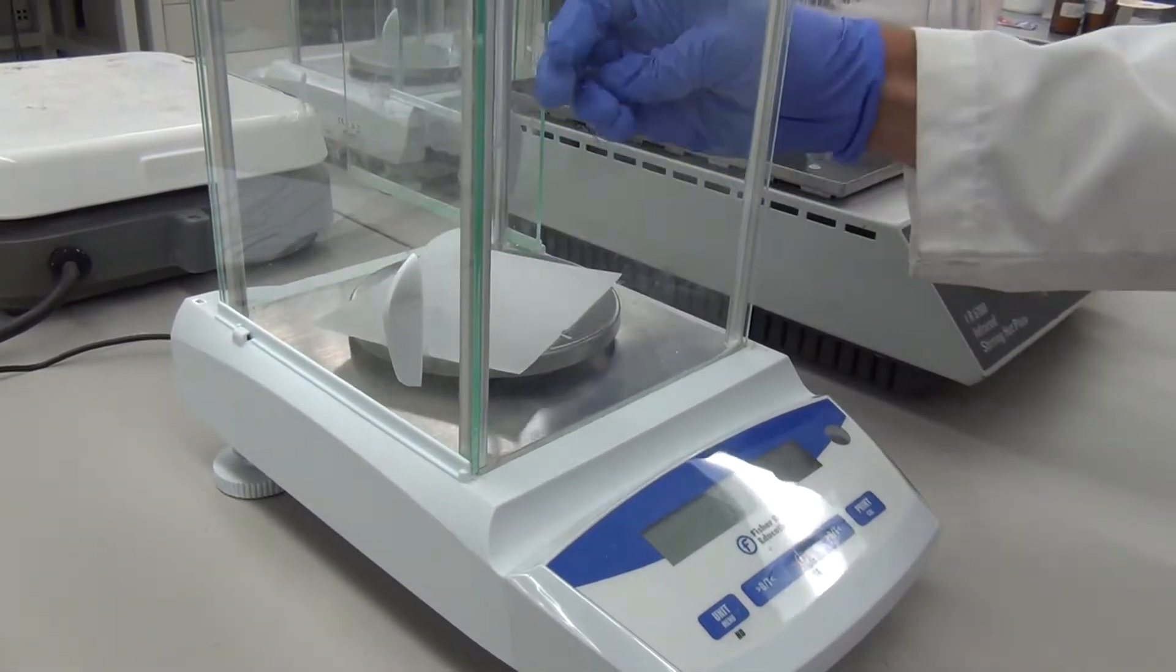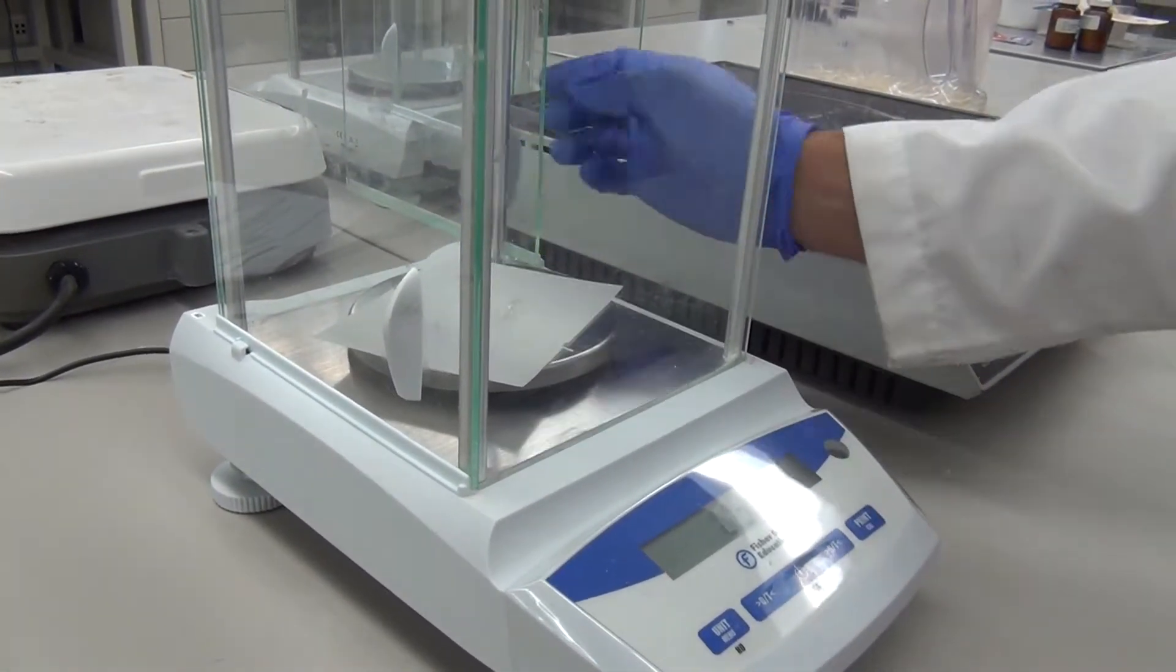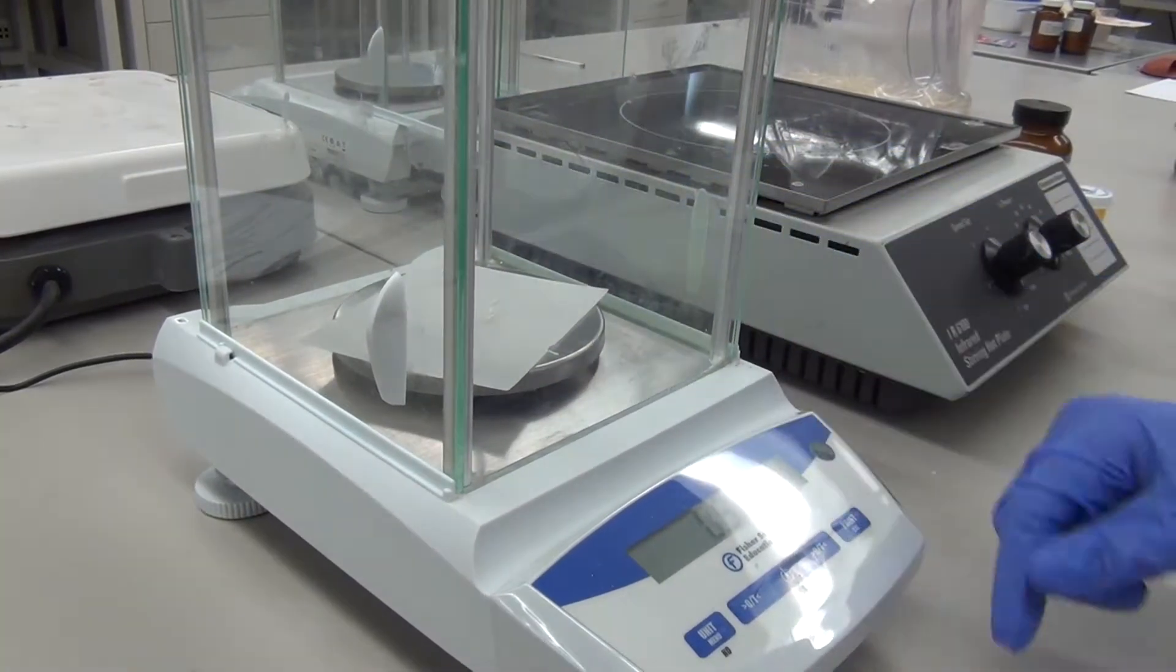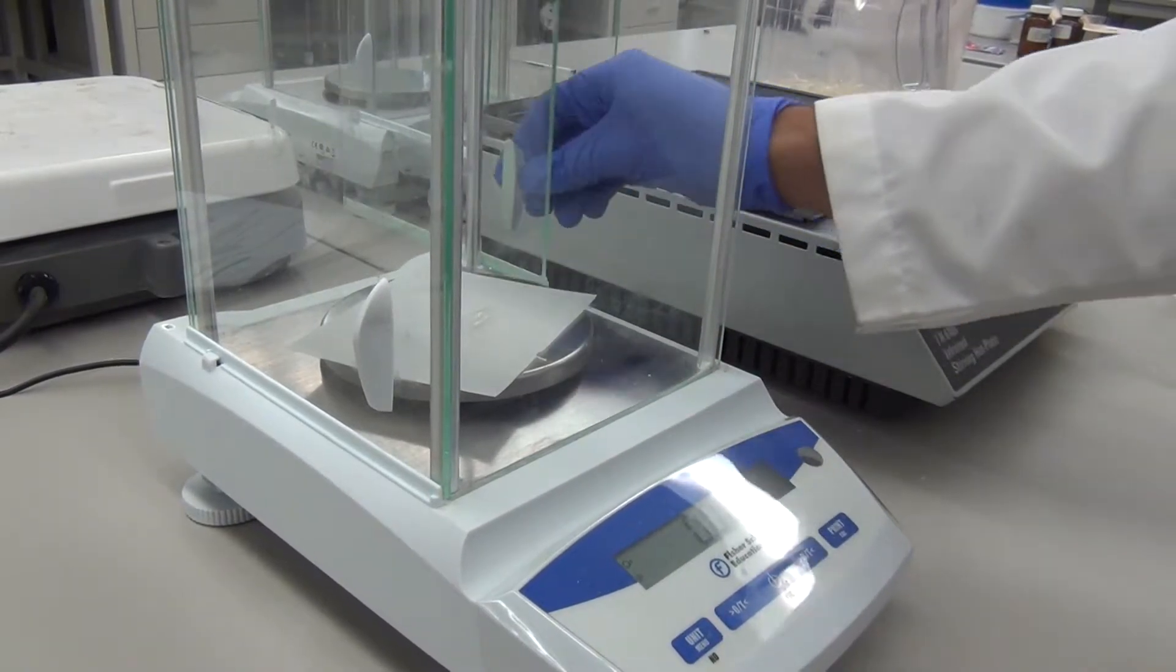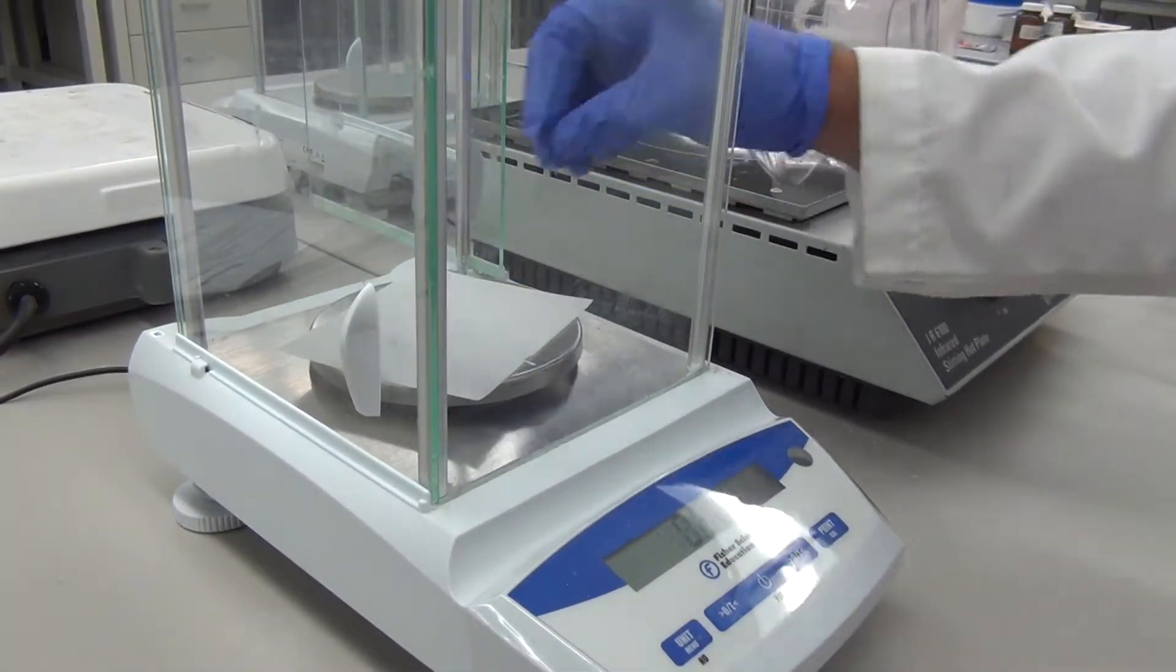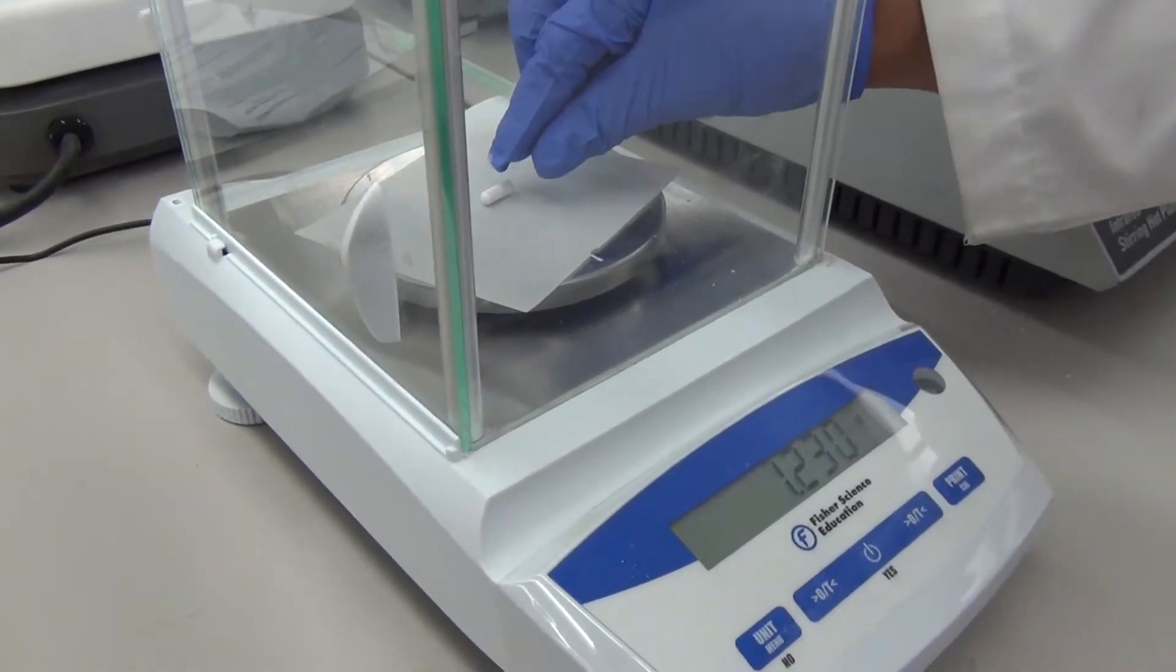Zero your balance using the weighing paper with an empty capsule. Remove the empty capsule and place the capsule you just filled on the weighing paper. This will be your target capsule weight.